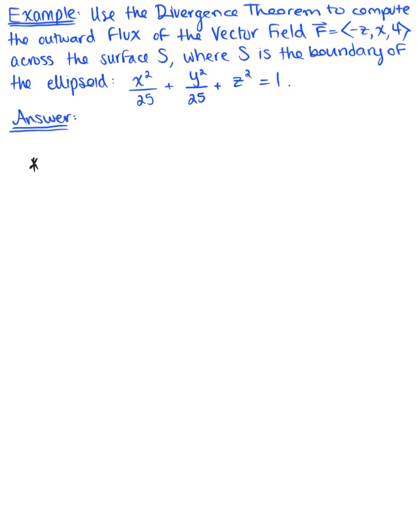So we know we want to compute the outward flux for this given vector field. The vector field is <-z, x, 4>. So we need the divergence of the vector field.